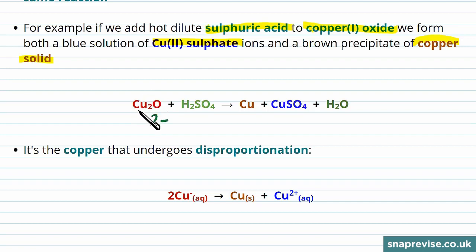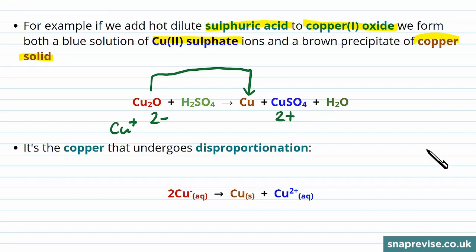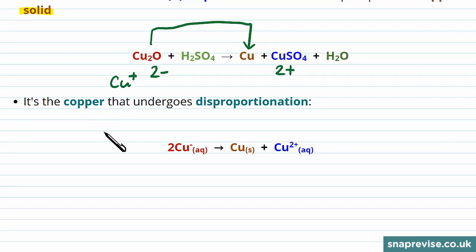So we have our copper 1+ going to Cu, which has no oxidation number, and copper sulfate, which has an oxidation number of 2+. We can look at just the copper here, because that's what undergoes the disproportionation, and we can see that the two lots of copper 1+, that should be, not 1-, so the two lots of copper 1+ are oxidized, one of them, to form copper 2+.